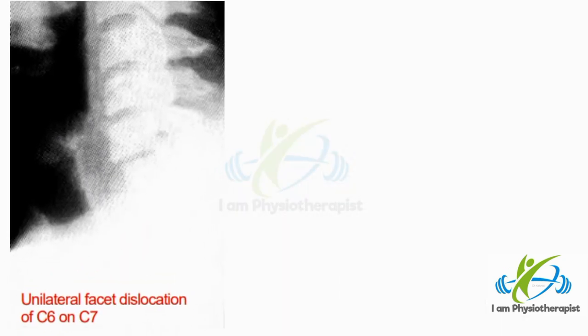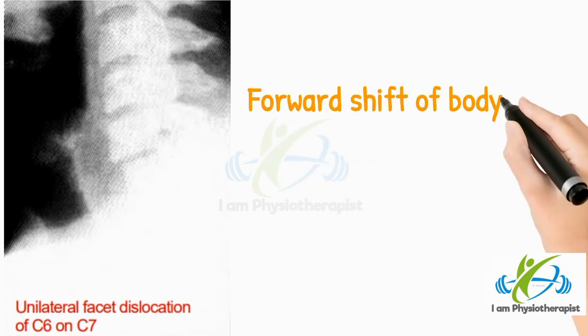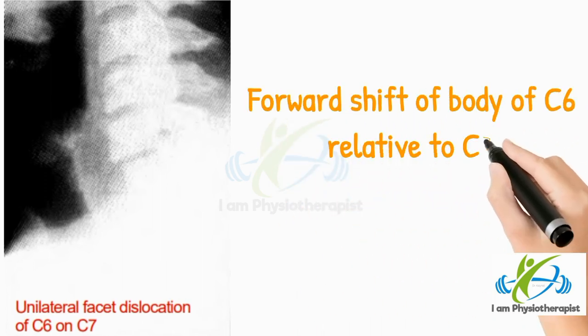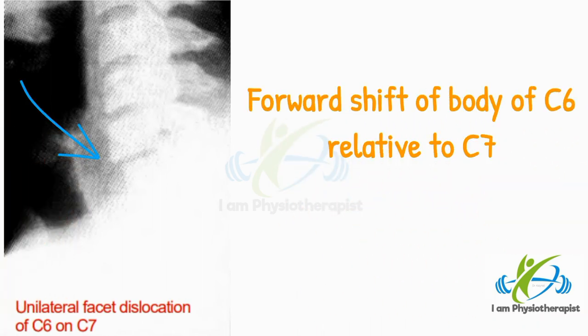In this X-ray, there is slight forward shift of the body of C6 vertebra relative to that of C7. Diagnosis is unilateral facet dislocation of C6 on C7.